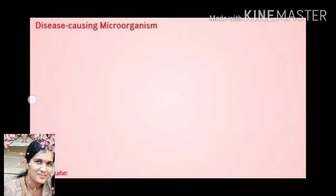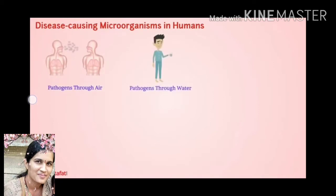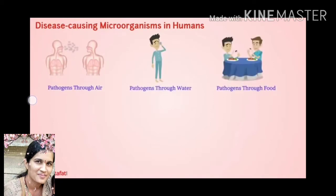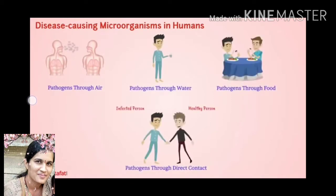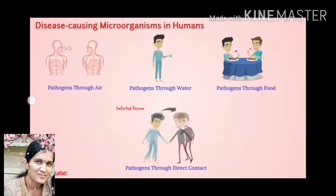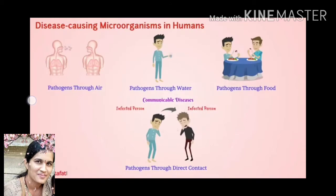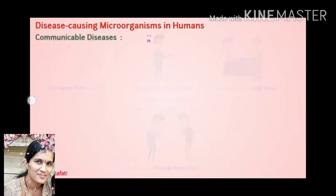Disease-causing microorganisms in humans. Pathogens enter our body through the air we breathe, water we drink, or the food we eat. They can also get transmitted by direct contact with an infected person or carried by an animal. Microbial diseases that can spread from an infected person to a healthy person are called communicable diseases.